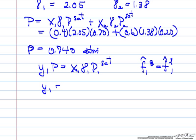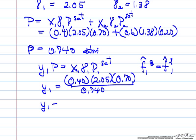And so y1 is x1 times gamma 1 times p1 sat over total pressure, and y1 is 0.78, which means y2 is 0.22.